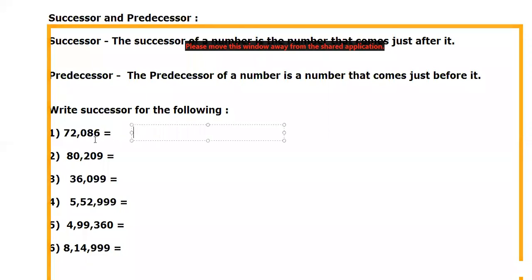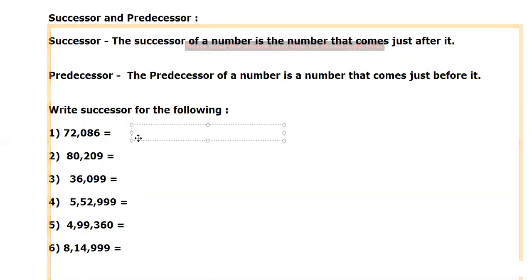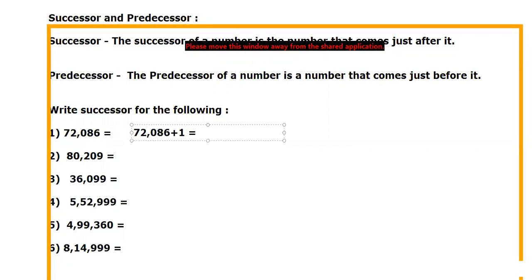In this, the last digit, the ones place, is going to change because we will not get the whole number to change. 72,086, what I said, you have to add one. If you add one, only the six which is in the ones place is going to change. Rest all the digits will come as it is. After six, what will come? Yes, seven. So isn't it easy?